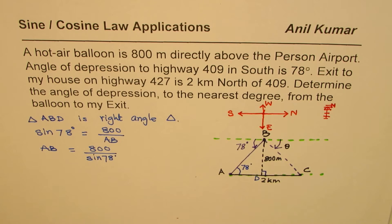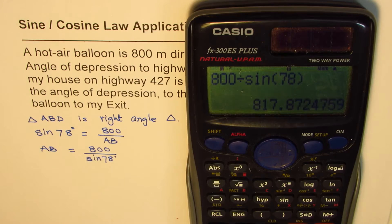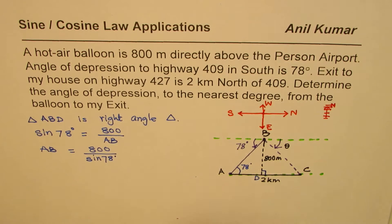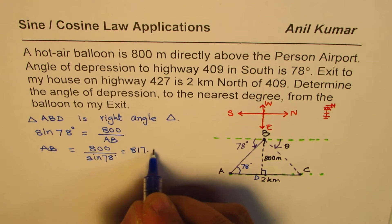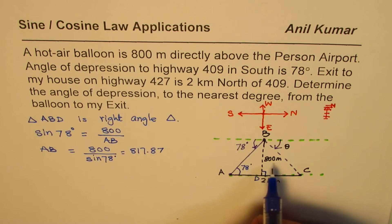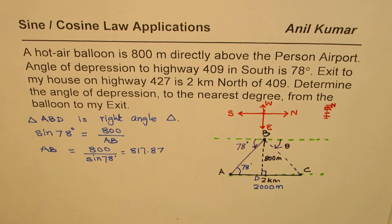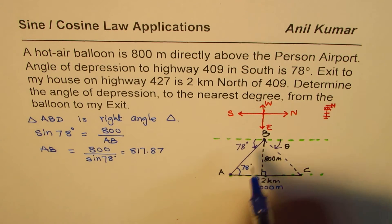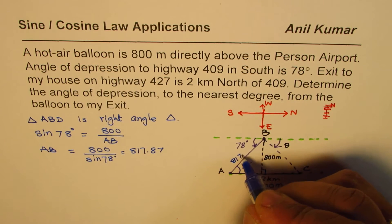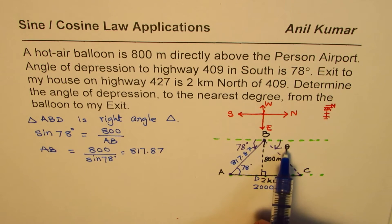Using the calculator: 800 divided by sine of 78 gives us 817.87. Now we also need to note that we are working in meters, so the 2 kilometers must be converted to 2000 meters. Once we know side AB is 817.87 meters, we'll keep it to two decimal places to get a better result for the given angle.